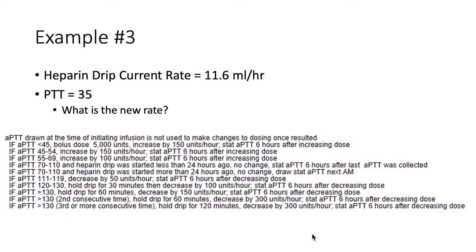Example three: we have a heparin drip running at 11.6 mls per hour and the PTT comes back at 35. What is the new rate? Since the PTT is 35, we follow these directions because the PTT is less than 45. The directions say to give a bolus dose of 5000 units, increase by 150 units per hour, and draw a PTT six hours after increasing the dose. To calculate the new rate, we focus on the increase by 150 units per hour.